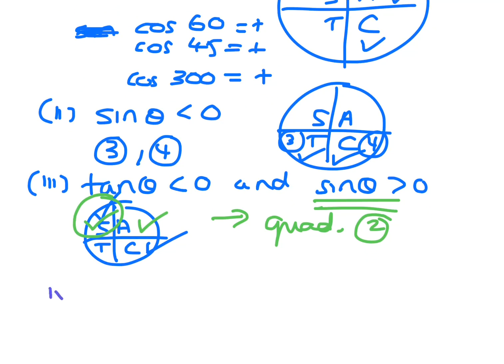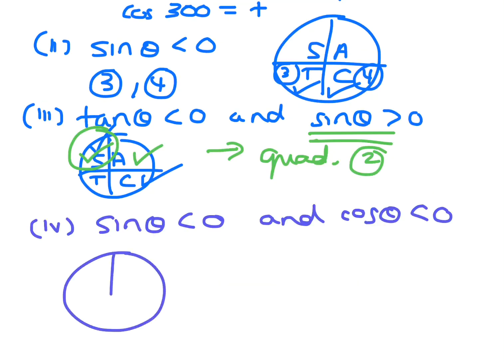Just look at another one. Sine theta is less than 0 and cos theta is less than 0. Draw your circle. All stations to Coffs.